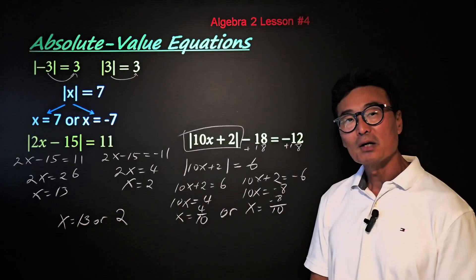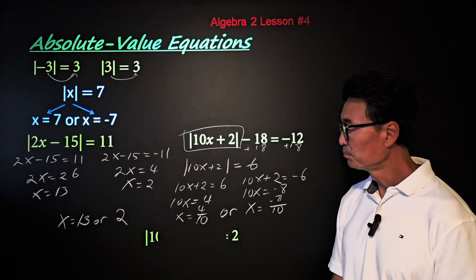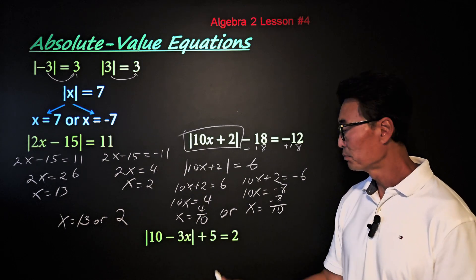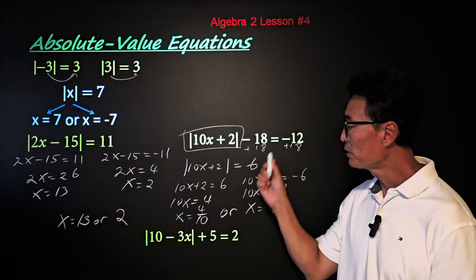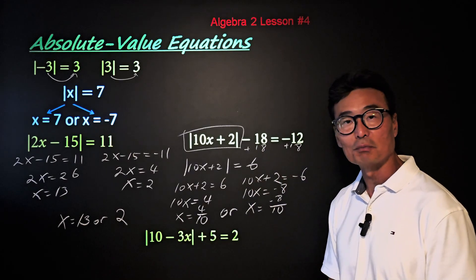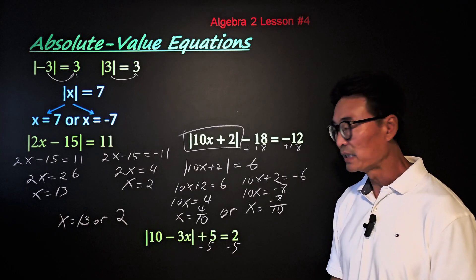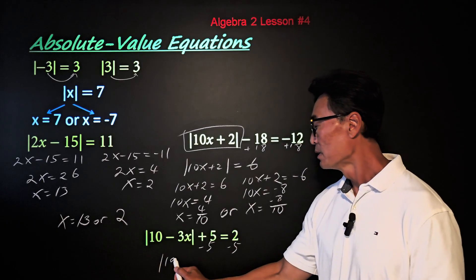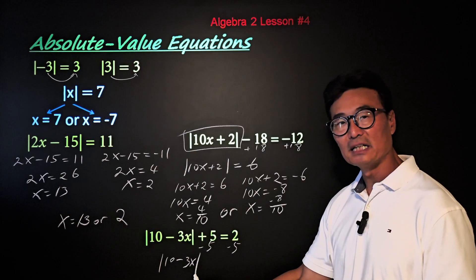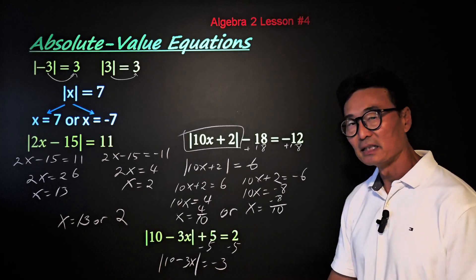I'd like to show you one more example. When you have absolute value of 10 minus 3x plus 5 equals 2, just like we did before, we need to isolate the absolute value portion. So we subtract 5 from both sides, giving us absolute value of 10 minus 3x equals negative 3.